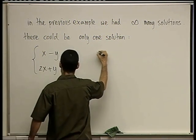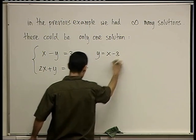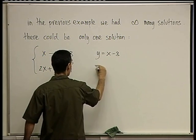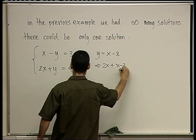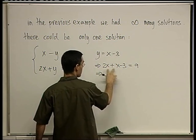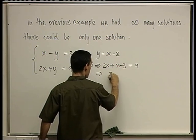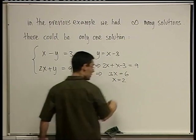Let's solve it. From the first one, I know that y equals x minus 3. I plug it into the second one, so I get 2x plus x minus 3 equals 9. Therefore, 3x equals 6... wait, 3x equals 12.